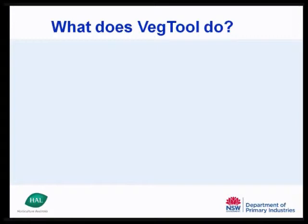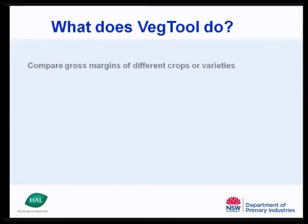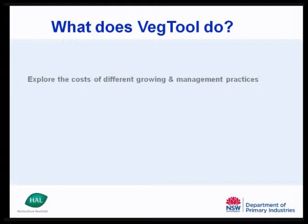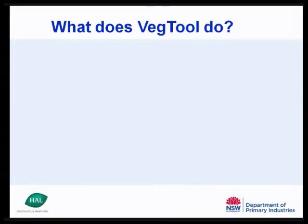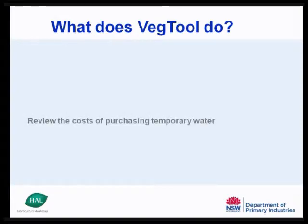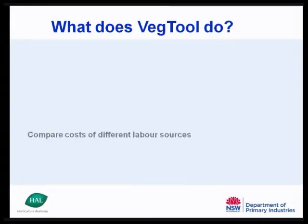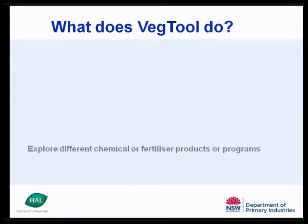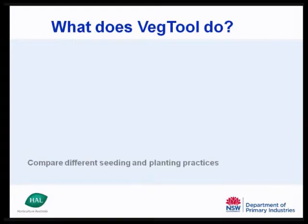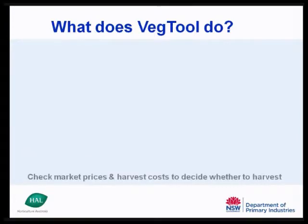VegTool can do a range of things depending on how it's used. It's possible to analyse the potential income and operating costs of a crop, compare gross margins of different crops or varieties, explore the costs of different growing and management practices, compare gross margins of different growing and harvest seasons, compare gross margins of different yields and market prices, review the costs of purchasing temporary water, compare costs of different labour sources, explore different chemical or fertiliser products or programs, compare different seeding and planting practices, or check market prices in relation to harvest costs and decide whether to continue through to harvest or not.